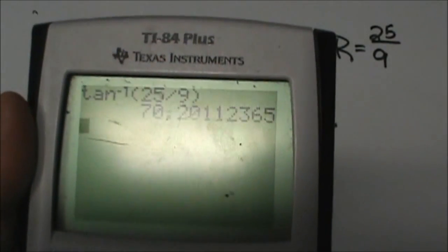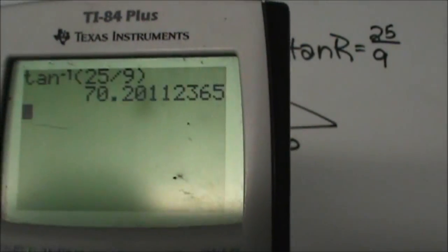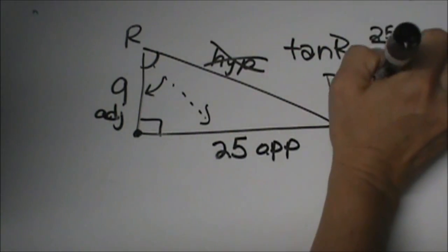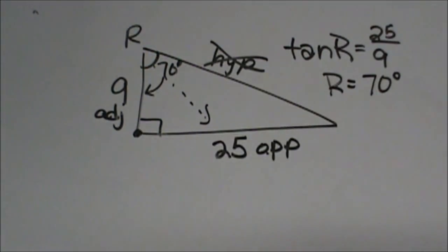Let's see what we get as our angle measure: 70.2, so it is 70 degrees. So angle R is 70 degrees. That is how you figure that out.